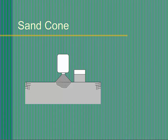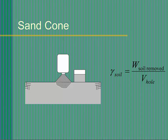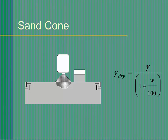By weighing the sand container before and after we fill the hole, we will know the weight of calibrated sand in the hole. Since we know the unit weight of the sand, we can compute the volume of the hole as the weight of the sand filling the hole divided by the unit weight of the sand. Now we know both the weight of the soil removed from the hole and the volume of the hole. We compute the in-situ unit weight as the weight of the soil removed divided by the volume of the hole. If we have measured the moisture content, we can also compute the dry unit weight as the total unit weight divided by the quantity 1 plus the moisture content divided by 100.